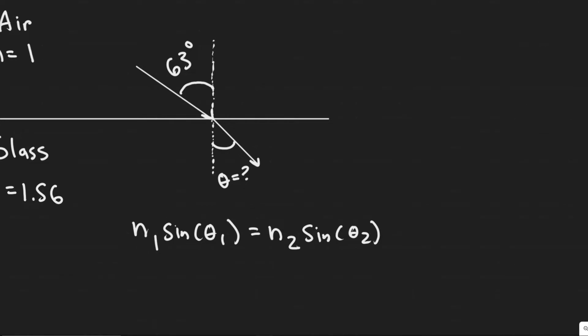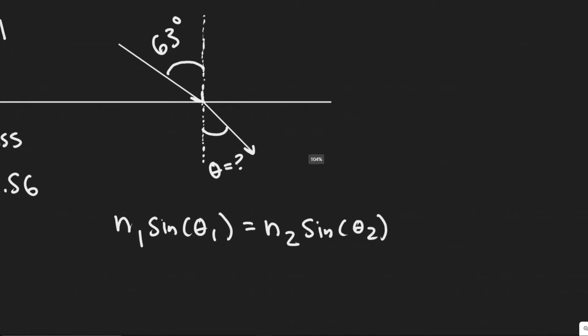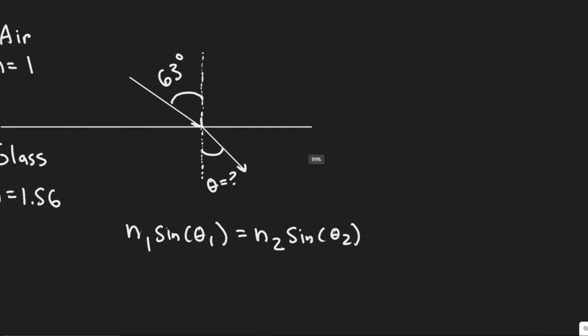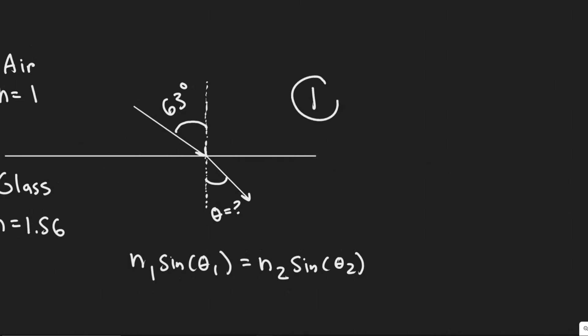When light travels, this formula relates it. Theta 1 and theta 2 are your angles here. Theta 1 is in the beginning. We'll call it initially 1, and then this would be 2. So it goes from 1 to 2, one material to another.